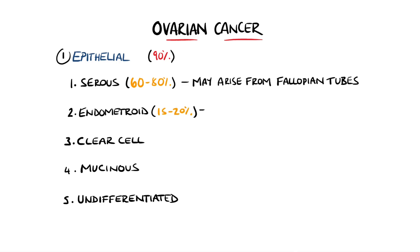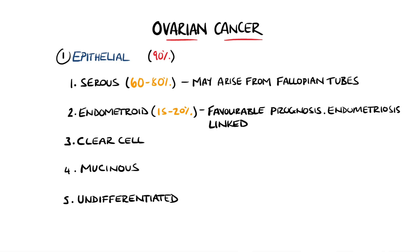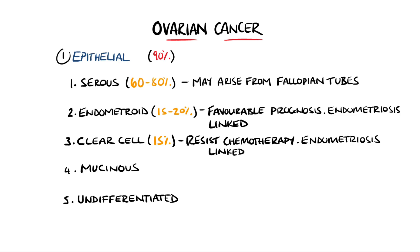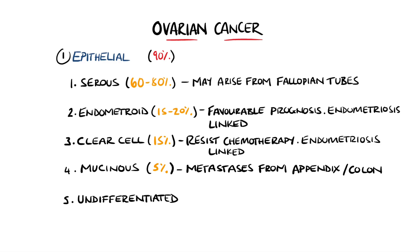Endometrioid type represents around 15% to 20% of cases and generally has a favorable prognosis. It is thought that there is a link between endometrioid type ovarian cancer and endometriosis. Clear cell cancers make up around 15% of epithelial ovarian cancers and are typically resistant to chemotherapy; again, there may be a link with endometriosis. Mucinous makes up around 5% of cases and may in fact be metastases from the appendix or the colon. Undifferentiated or unclassified generally have a poor prognosis.